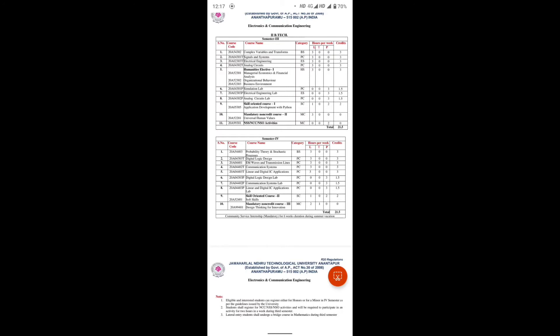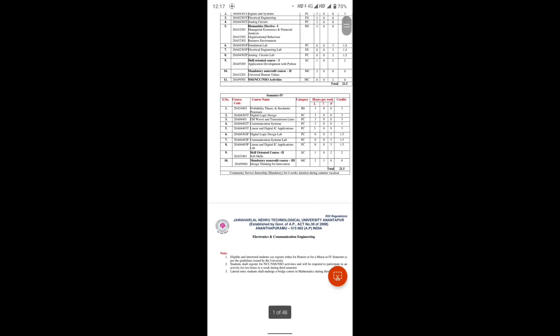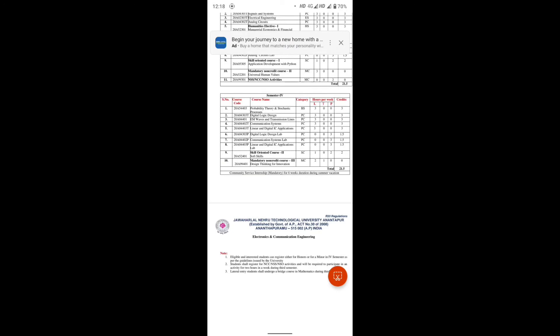Click on the link in the description. For semester 4 (2-2), course code, course name, category, hours per week, credits: Probability Theory and Stochastic Process, Digital Logic Design, EM Waves and Transmission Lines, Communication Systems, Linear and Digital IC Applications.